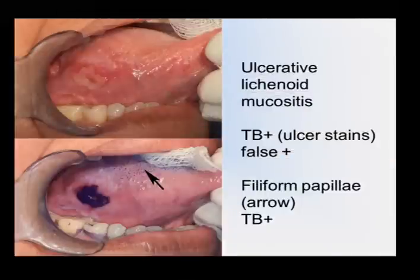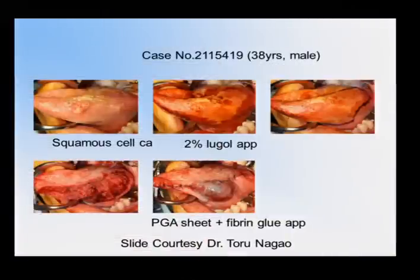You also have to appreciate that all ulcers are going to pick up toluidine blue. Here is a patient with lichenoid disease, and the filiform papillae on the dorsal surface of the tongue will also pick up the toluidine blue. Lugol's iodine will actually stain normal mucosa, and there's a big study going on in the U.K. at the moment looking at whether this will help with margins — a slide I got from Dr. Nagao.